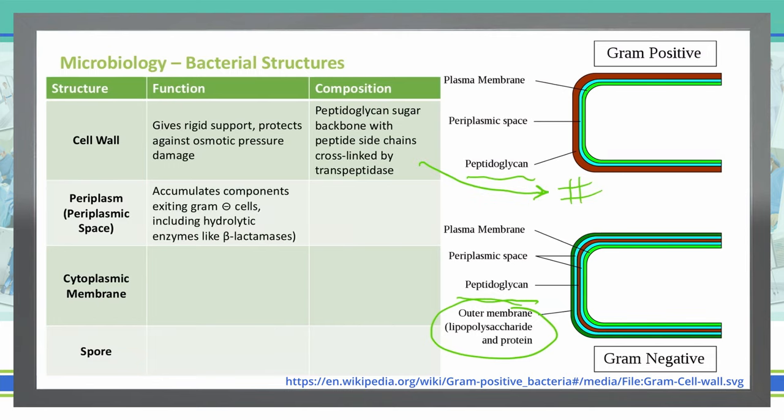The periplasm, also known as the periplasmic space, is where we have accumulation of components that will exit the gram-negative cells, such as hydrolytic enzymes and beta-lactamases. This area is not made up of anything — it's just space. It is a space between the outer membrane and the peptidoglycan layer, as you can see in blue on the bottom of the gram-negative, and also between the peptidoglycan layer and the plasma membrane below that.